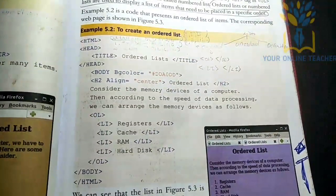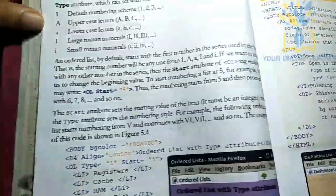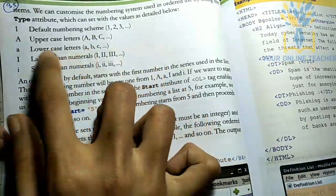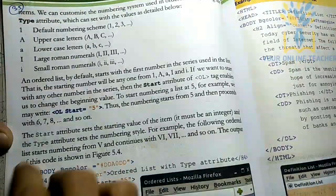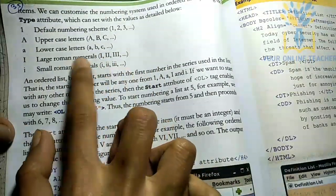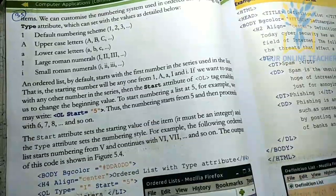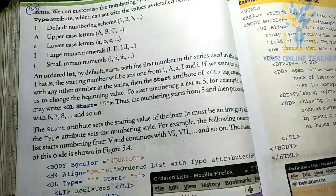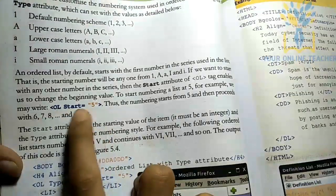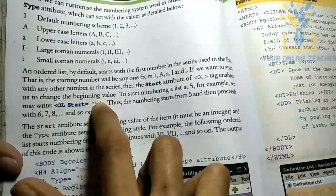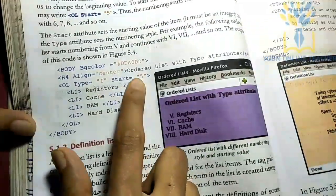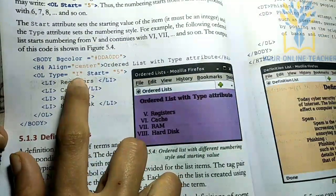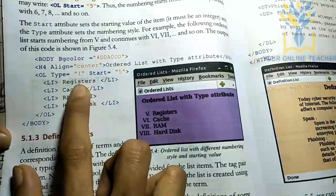The next thing is ordered list. On the ordered list, you use the <ol> tag and it will number items 1, 2, 3, 4. You can use the start attribute — for example, start="5" — so numbering begins at 5. You can also use type="I" for Roman numerals.